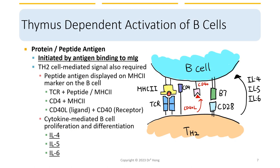Let's take a closer, deeper look at the thymus-dependent activation of B cells. It requires TH2 helper cells. The process is initiated by antigen binding to the membrane-bound immunoglobulin. We have the synapse between TH2 helper cells and B cells, with the typical antigen or peptide presented on MHC class 2 binding to T cell receptors, along with CD4 co-receptor interacting with MHC class 2. The next phase involves CD40 ligand being secreted from the TH2 helper cell, which then binds to the CD40 receptor on B cells.